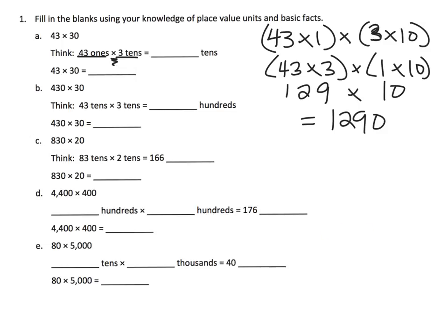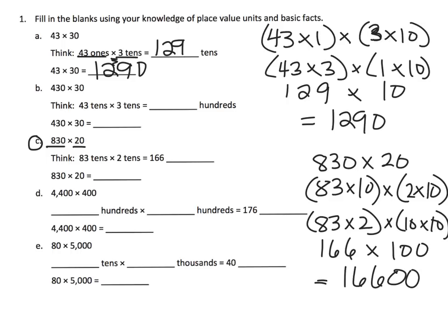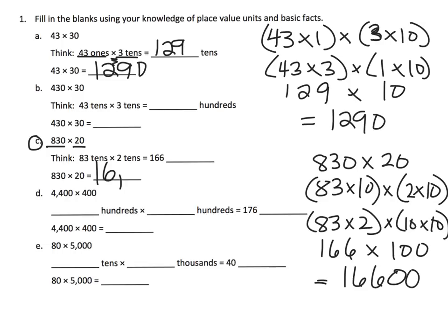83 times 2 is 166, and we know 10 times 10 is 100. So we end up with 166 times 100. From the previous module we learned how to multiply by powers of ten — ten, hundred, and a thousand — so this ends up equaling sixteen thousand six hundred.